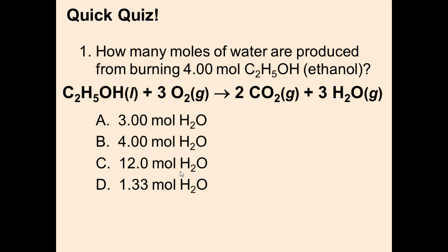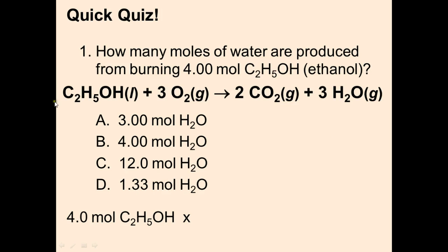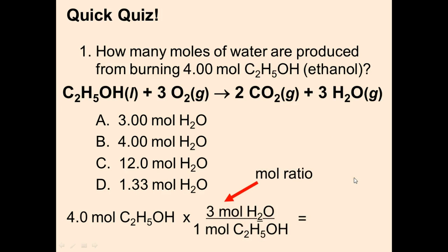Quiz question 1: How many moles of water are produced from burning 4 moles of ethanol? Using the mole ratio from the equation — 1 mole ethanol to 3 moles H2O — we calculate 4 × (3/1) = 12 moles of H2O. The answer is 12 moles.